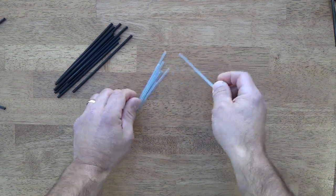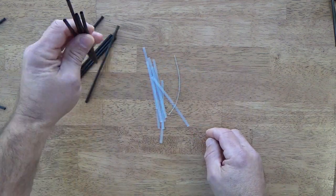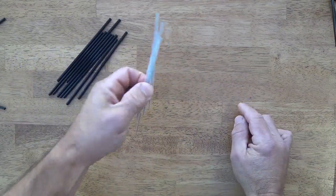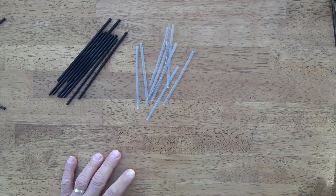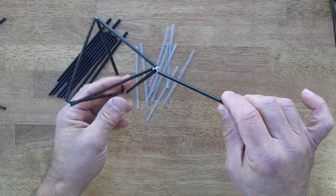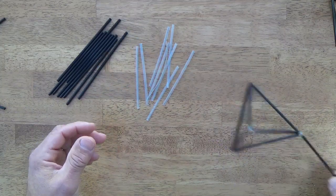This video is going to show you how to take some coffee stirrer straws and some twist ties and use them to make geometric frames like this that can be used for dipping into soapy water.